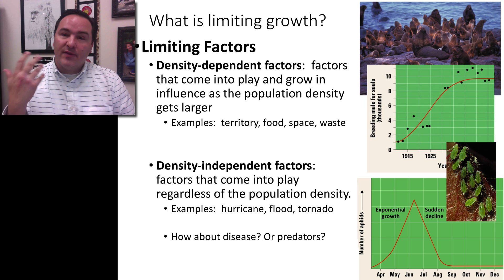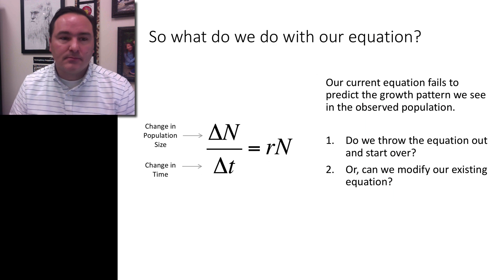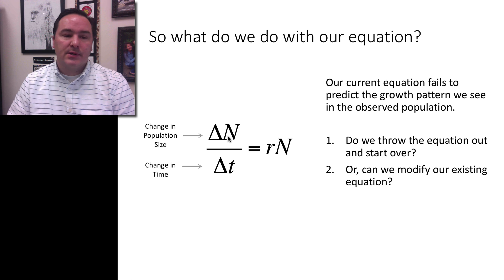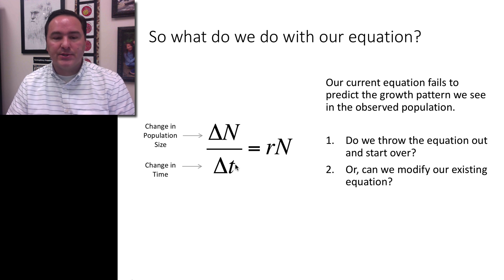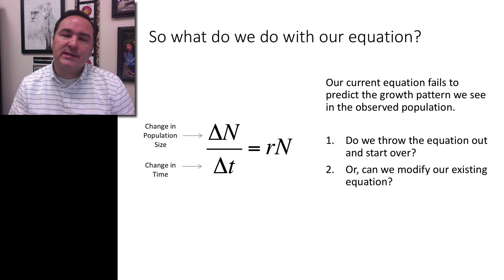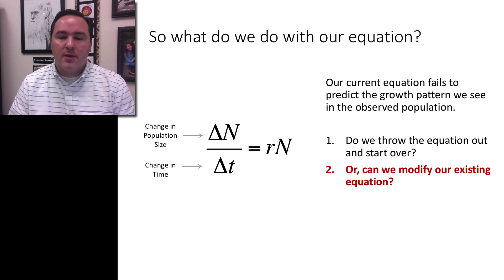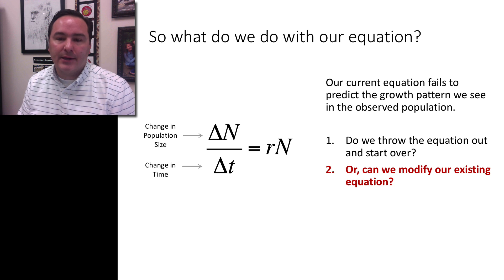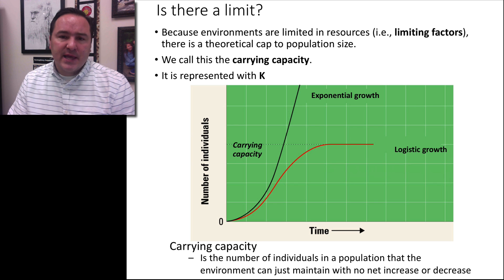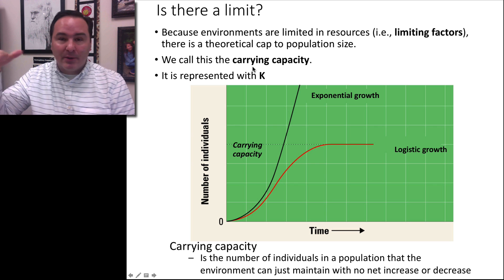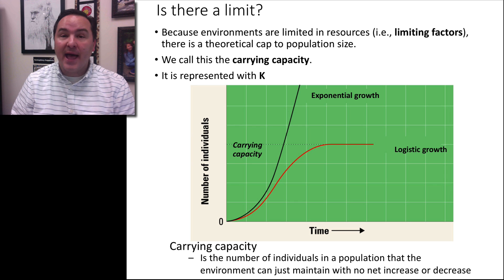So there are factors that are both density-dependent and density-independent. Now let's come back to our equation. The change in population size over the change in time — how much the population is increasing from one generation to the next — was equal to the rate times the population size. This equation fails to predict the growth pattern we're seeing in the observed data. But we can take this equation and tweak it to reflect reality. The actual limit or cap at which a population can grow is called the carrying capacity, represented by the capital letter K.